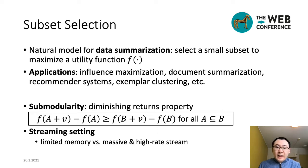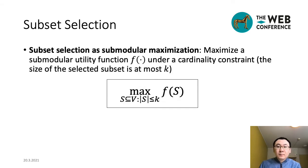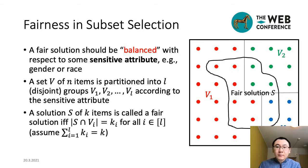Furthermore, we consider the subset selection problem in the streaming setting, which maintains summaries with limited memory over massive and high-rate data streams. Generally, our subset selection problem is formulated as the submodular maximization problem under a cardinality constraint. We aim to find a subset S of size at most K from dataset V to maximize the utility F(S).